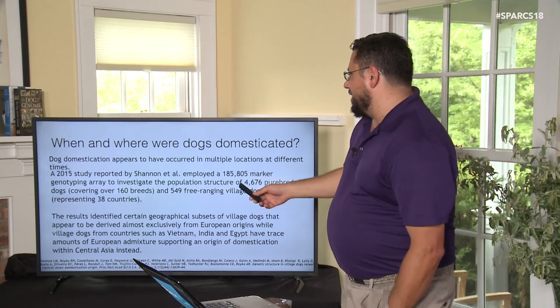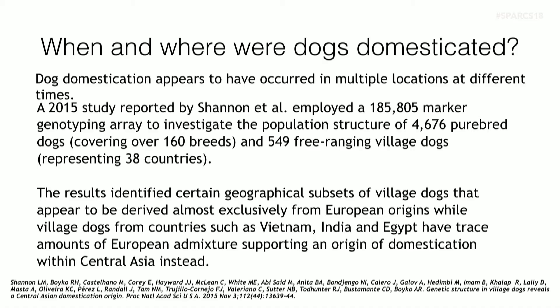They identified certain geographical subsets of village dogs derived almost exclusively from European origins, while also finding dogs from Asia, India, and Egypt. There is admixture, so it seems like domestication happened concurrently at different places at different times.